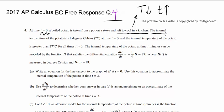I'm just writing those things that's coming to my mind. The internal temperature of the potato is 91 degrees Celsius at time t equals zero. And the internal temperature of the potato is greater than 27 for all times greater than zero. This is telling us the room temperature is 27.